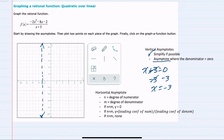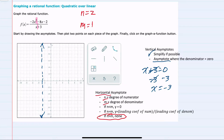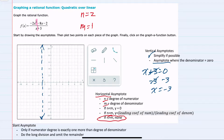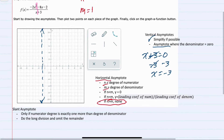Moving to our horizontal asymptote, we're looking at n and m, where n is the degree of the numerator — here, the degree of the numerator is 2 — and m is the degree of the denominator, which is 1. Since n is greater than m, we will not have a horizontal asymptote. However, the degree of the numerator is exactly 1 more than the degree of the denominator, so we will have a slant asymptote.